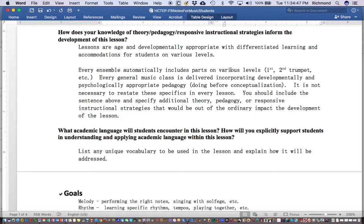Every ensemble automatically includes parts on various levels. Every general music class is delivered incorporating developmentally and psychologically appropriate pedagogy. For example, you will do the activities with the students, march the beat before you explain to them what a beat is, sing rounds and songs with ostinatos before you explain what harmony is, and so on. I do not expect you to rewrite your Piaget textbook or your Brunner textbook in this particular area. It's pretty much assumed that you will know those things. Include the sentence above and specify additional theory, pedagogy, or responsive instructional strategies that would be out of the ordinary.